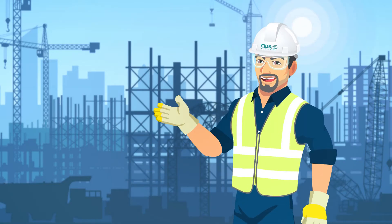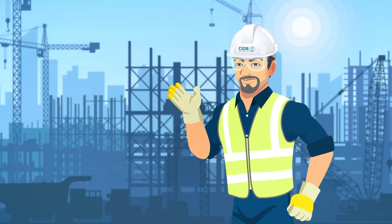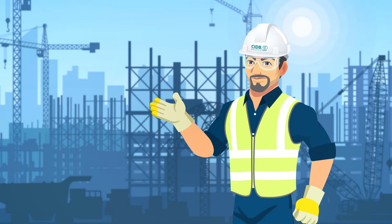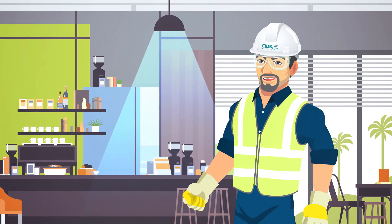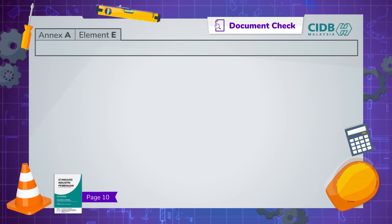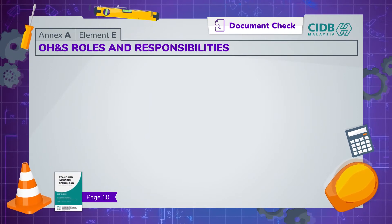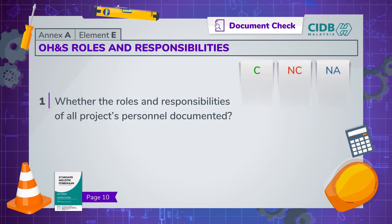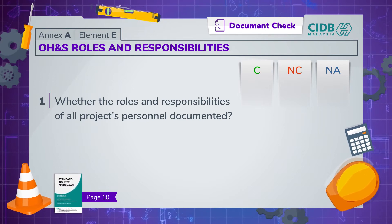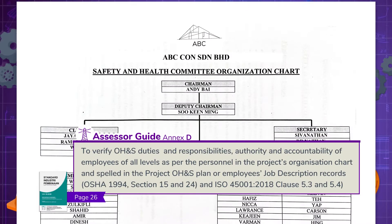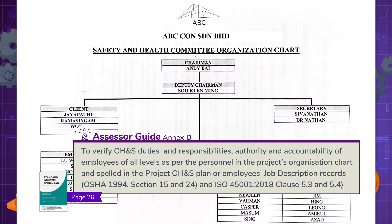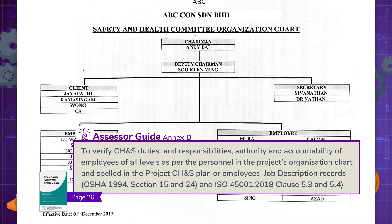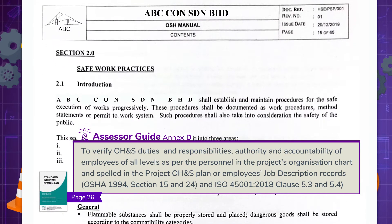We're done with the first four elements of document check. If you're still awake, let's move on. Otherwise, pause and get a cup of coffee. We start element E by assessing whether the OSH roles and responsibilities of all project personnel are documented. These are usually evidenced by the project organisation chart and spelled out in the project OSH plan or employee job description records.